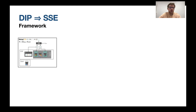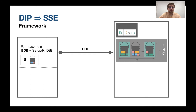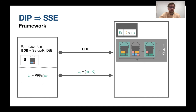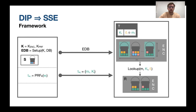We store the stash and keys on the client, and send the encrypted database — table t and the filled pages — to the server. When the client wants to search keyword w_i, they re-evaluate the PRF on w_i to get token t_{w_i}, which yields mask m_i and key k_i. Using m_i they decrypt l_i (the list length), and use k_i with the DIP scheme to look up the matching buckets, which are returned to the client for decryption. All efficiency guarantees from the DIP scheme are inherited by this SSE scheme.